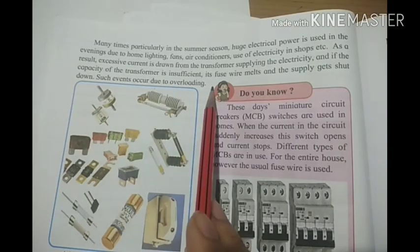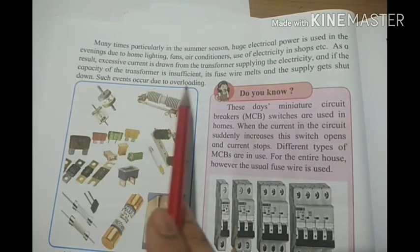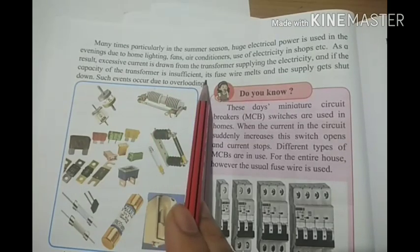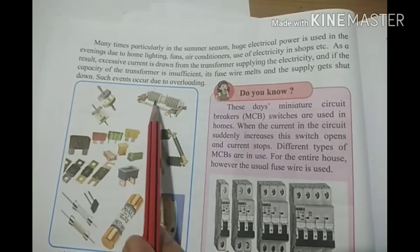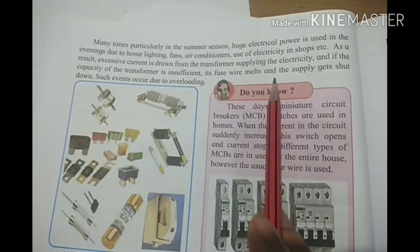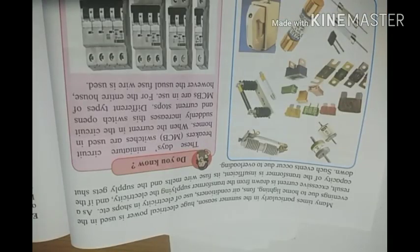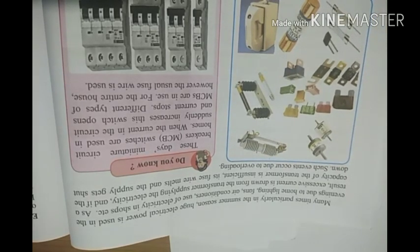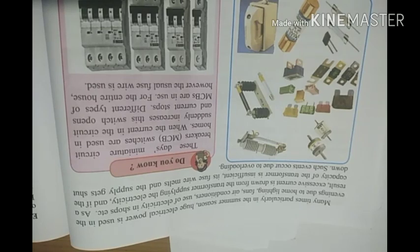Such events occur due to overloading — yaani ki wire mein se zyada electricity flow hone ki wajah se overload aata hai aur saare electric appliances band ho jaate hain, kyunki fuse wire melt ho jaati hai. Is tarah se humne heating effect of electric current ke baare mein padh liya hai. Agar aapko kuch bhi doubt ho toh please mujhe comment kijiye, aur agar aapko mera video accha lage toh ise like, share, comment and subscribe zaroor kijiye. Thank you.